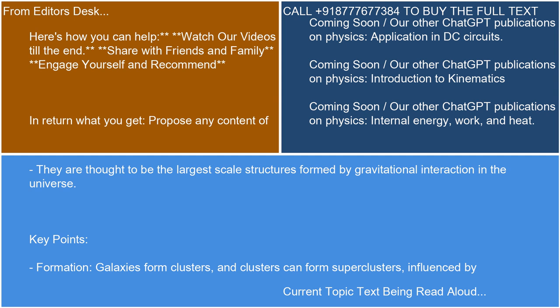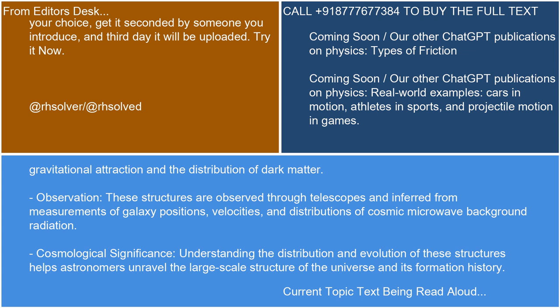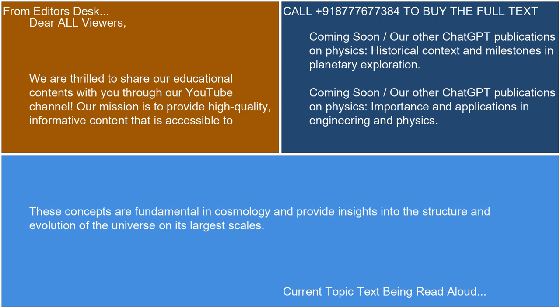Key points: Formation — galaxies form clusters, and clusters can form superclusters, influenced by gravitational attraction and the distribution of dark matter. Observation — these structures are observed through telescopes and inferred from measurements of galaxy positions, velocities, and distributions of cosmic microwave background radiation. Cosmological significance — understanding the distribution and evolution of these structures helps astronomers unravel the large-scale structure of the universe and its formation history. These concepts are fundamental in cosmology and provide insights into the structure and evolution of the universe on its largest scales.